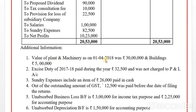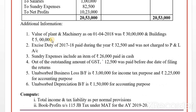Regarding value of plant and machinery: as of 1st April 2018, WDV is given for plant and machinery as well as building — this relates to Section 32 depreciation calculation used in step number one. This does not appear in book profit step three. Excise duty of 2017-18, Rs. 32,500, paid during the year and not charged to profit and loss account — it is an allowed expense for steps one and two, but does not appear in book profit.